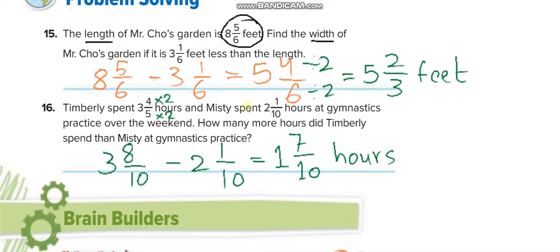To minus this one, the denominators are not the same, so we multiply this one by 2, we get 3 8/10, then minus it from 2 1/10, which is 1 7/10 hours.